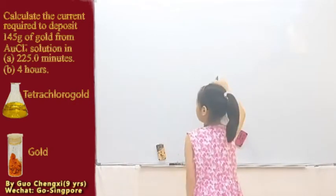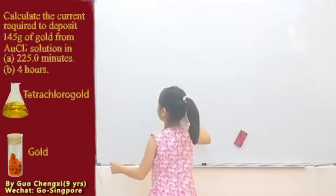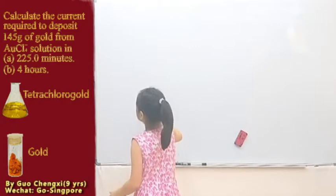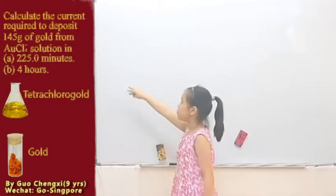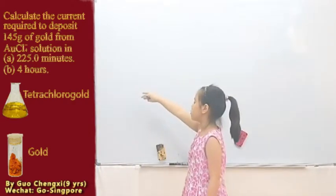calculate the current required to deposit 145 grams of gold from AuCl₄⁻ solution.